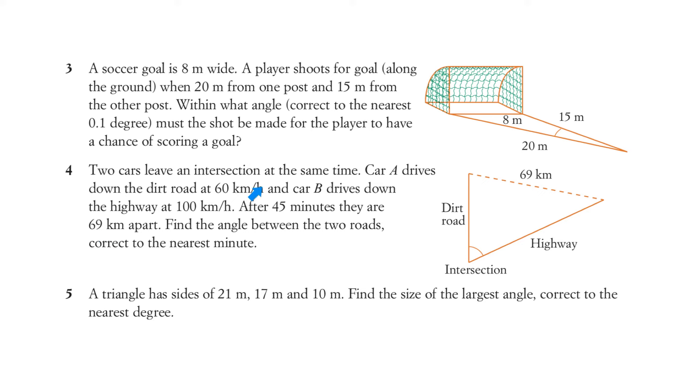So that point is after 45 minutes. Well, that means if that's 60 kilometres per hour, 45 minutes is three quarters of an hour. So three quarters of that 60 will be that length and three quarters of 100 will be that length. And since we then have that one, that one, and that one, we'll be able to find the angle.